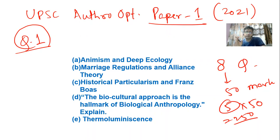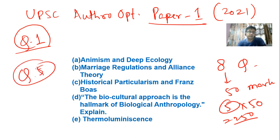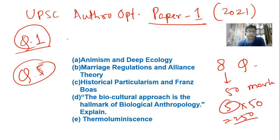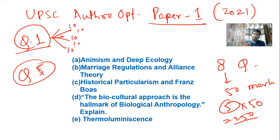Out of the five questions you have to attempt, two are compulsory: question number one and question number five. Then you have to attempt three others. In the compulsory question, there are usually five sections — A, B, C, D, E — each of 10 marks, to be written in 150 words.